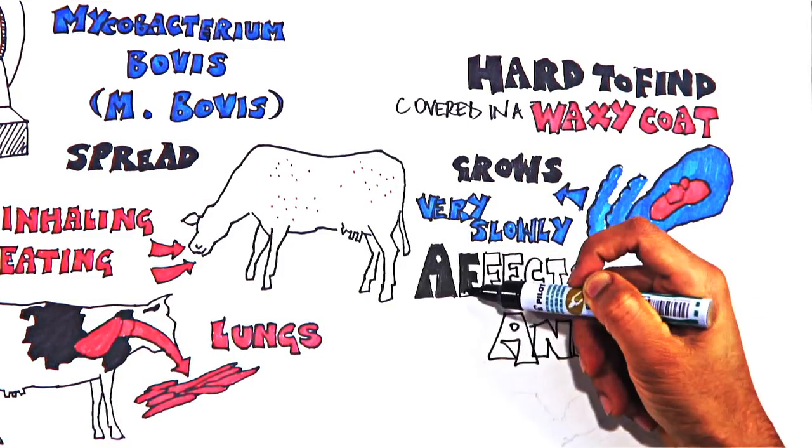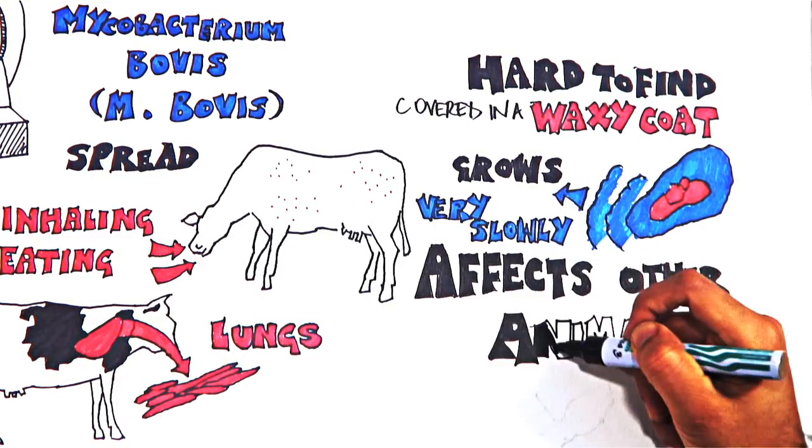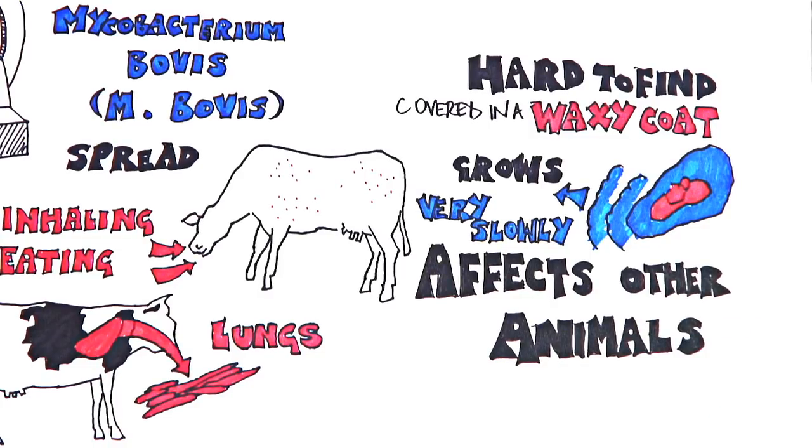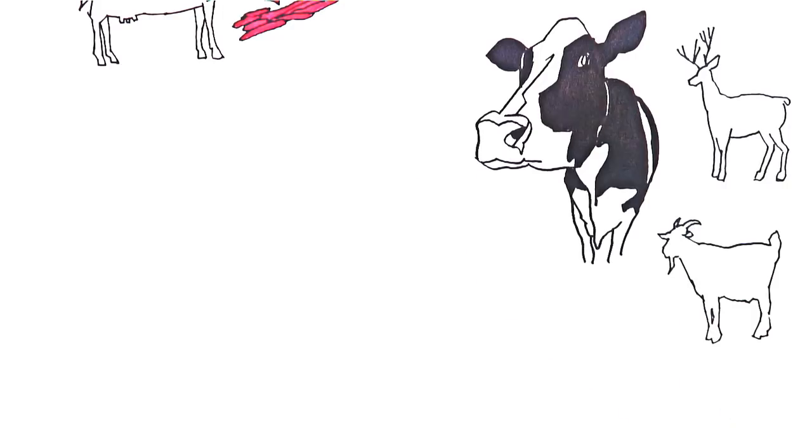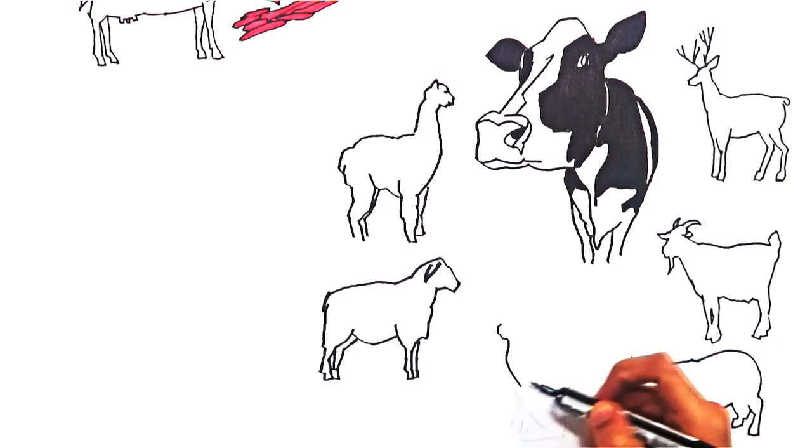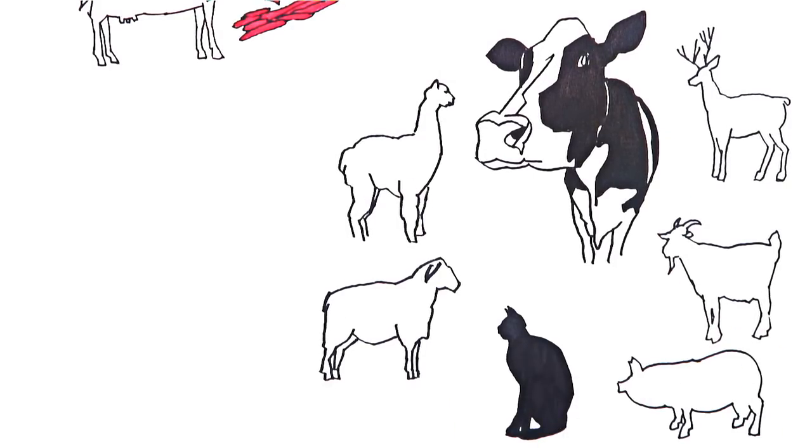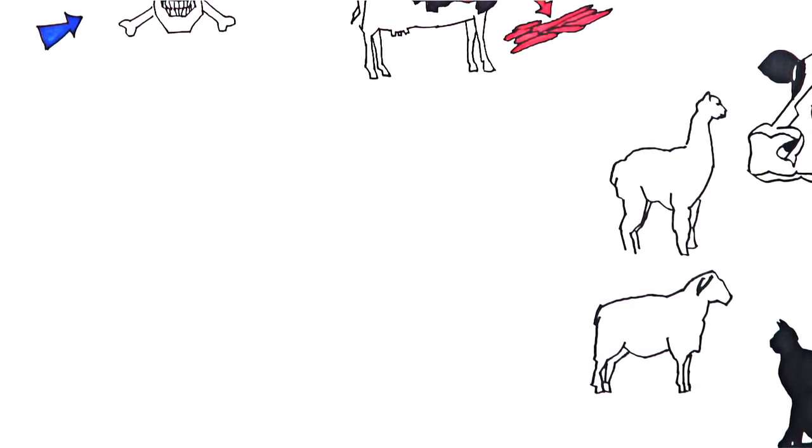Although bovine TB is a disease of cattle, it can also affect other animals. High levels of infection can spread to deer, goats, alpacas, pigs, sheep and even cats, although these animals play little part in spreading the infection to cattle.